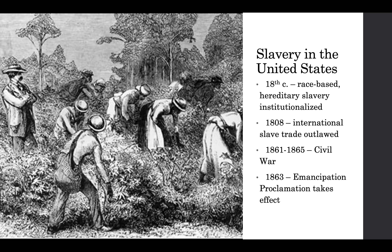An escalating series of political and sometimes actual physical conflicts over the question of slavery led ultimately to the secession of the southern states and the start of the Civil War in 1861. Abraham Lincoln issued the Emancipation Proclamation in 1863, which officially freed all enslaved people in areas held by the Union Army. But it wasn't until the end of the war in 1865 that slavery as an institution came to an end for the entire country.